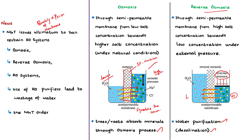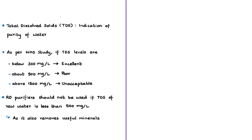One way of measuring the purity of water is based on total dissolved solids (TDS). Total dissolved solids is made up of inorganic salts as well as small amounts of organic matter. As per a study by the World Health Organization, if TDS levels are below 300 milligrams per liter the water is considered excellent quality. If TDS ranges up to 900 milligrams per liter the water quality is said to be poor, and if TDS levels are above 1200 milligrams per liter the water quality is unacceptable.